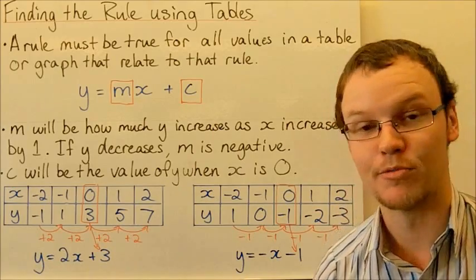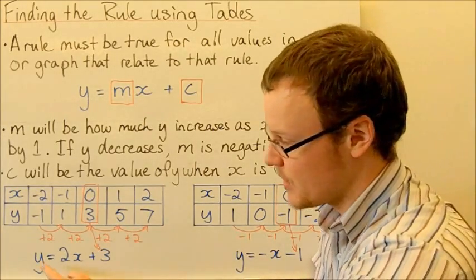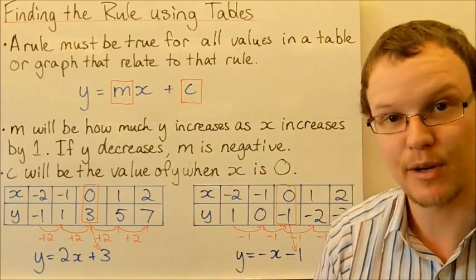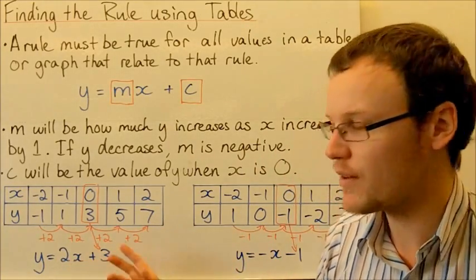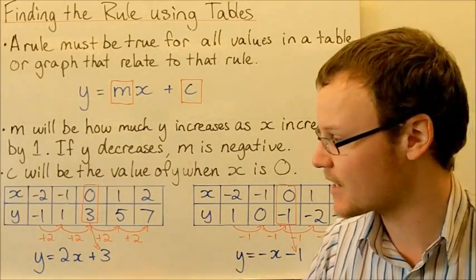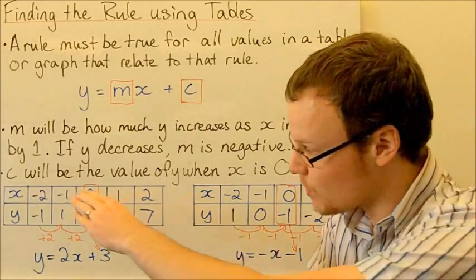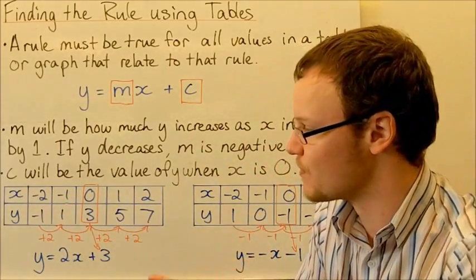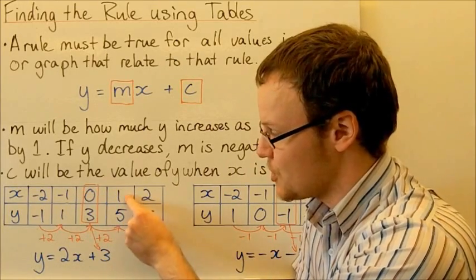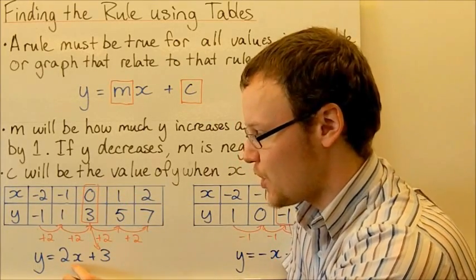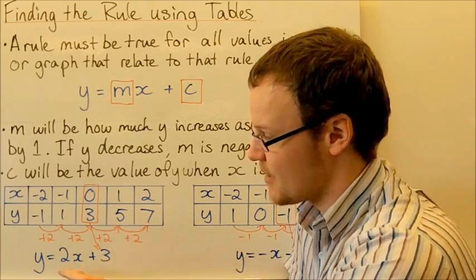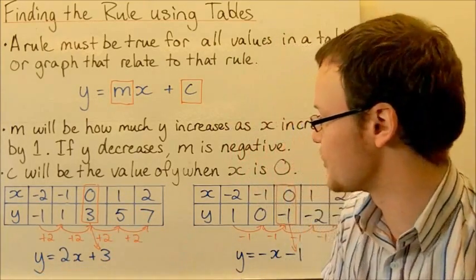So our rule for this problem is y equals 2x plus 3. We can quickly check by substituting one of our values: for x equals 1, 2 times 1 is 2, plus 3 is 5. And yes, we get 5 as our answer for y. Excellent.